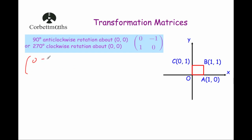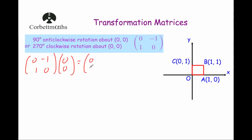So let's take our matrix 0, minus 1, 1, 0 and we're going to multiply by each of the points. Let's start with the point at the origin, the point 0, 0. Because this rotation is about the origin, this point should stay where it is. Multiplying the first row by the column: 0 times 0 is 0, minus 1 times 0 is 0, adding them together is 0, so the x coordinate is 0. Then taking the second row: 1 times 0 is 0, 0 times 0 is 0, adding them together is 0. So the point at the origin stays there.